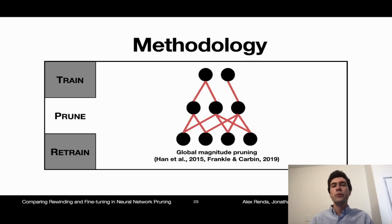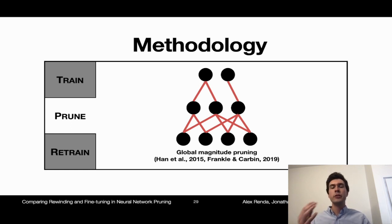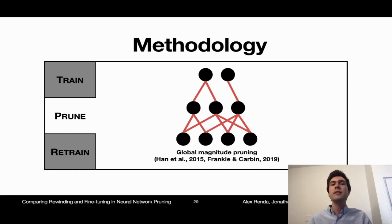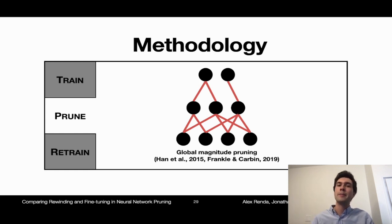Once we've trained a network, we have to prune it. In this presentation, we're only going to look at global magnitude pruning, which is a technique that prunes the weights in the network with the lowest magnitude, irrespective of their locations in the network. Basically, it just drops the bottom X percent of weights from the network. Since this technique prunes individual weights, it's an instance of what we call an unstructured pruning technique. In the paper, we also consider techniques that prune larger structures such as entire convolutional filters, but we won't have time to get into that in this presentation.